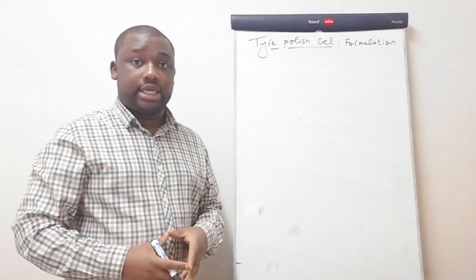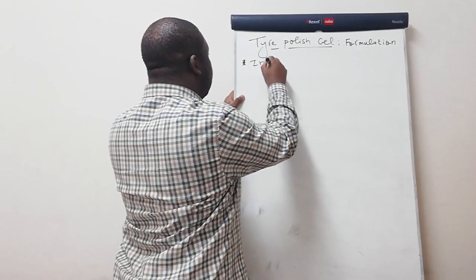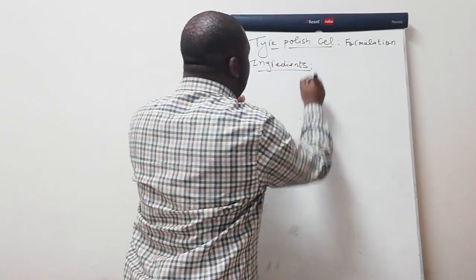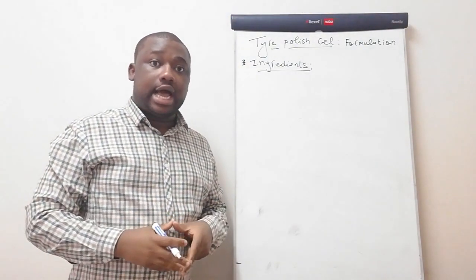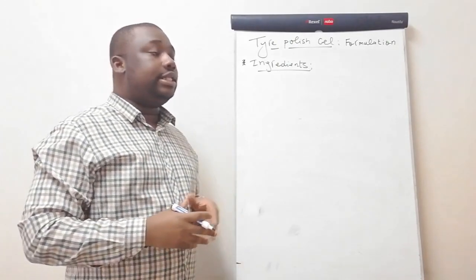So let's start by stating ingredients. We say ingredients. What are the ingredients you need to produce the tire polish gel? The ingredients are water, alphox, and silicon oil.